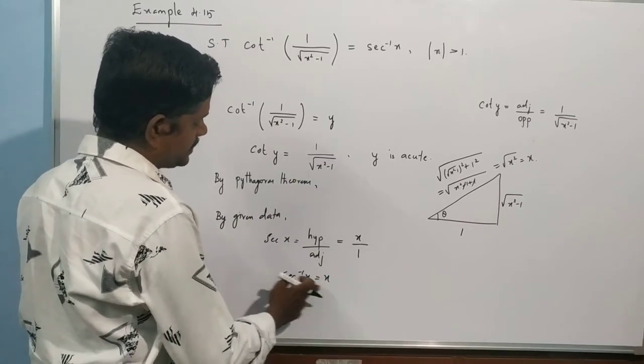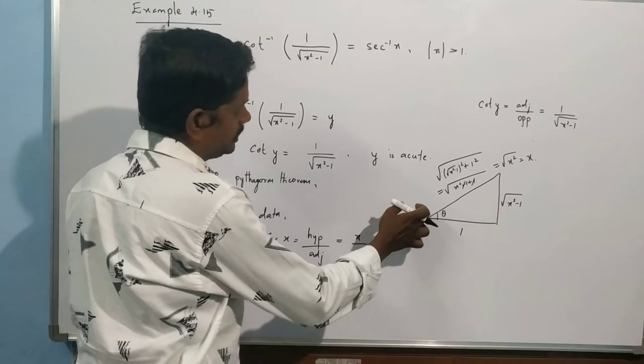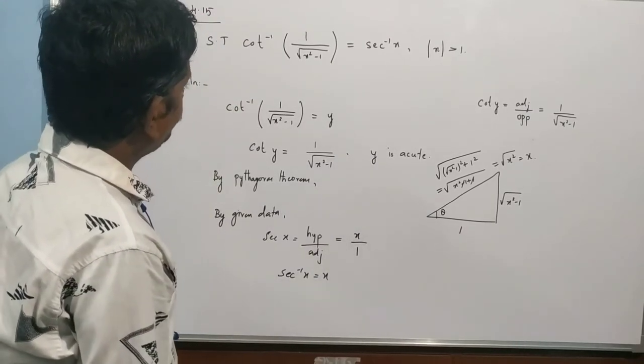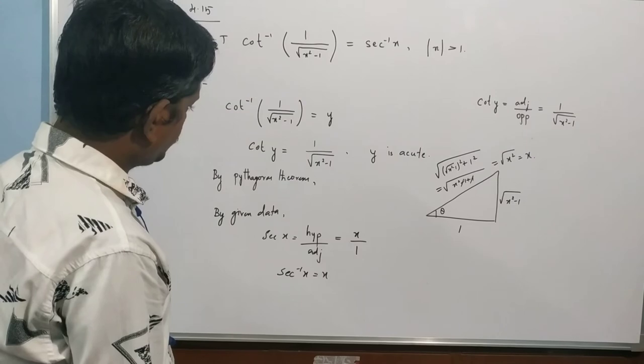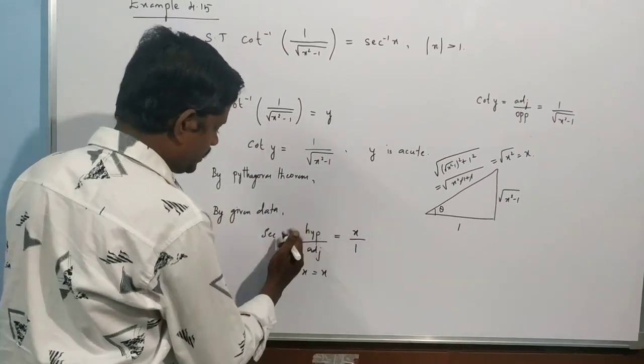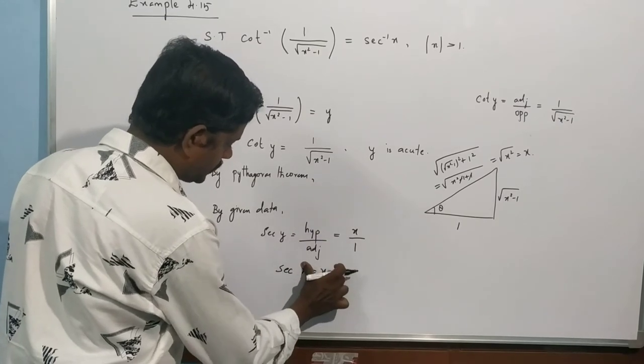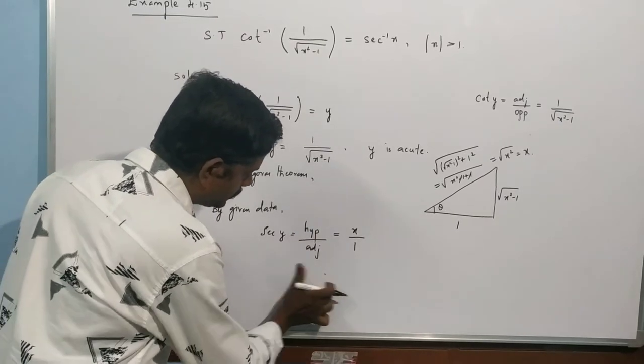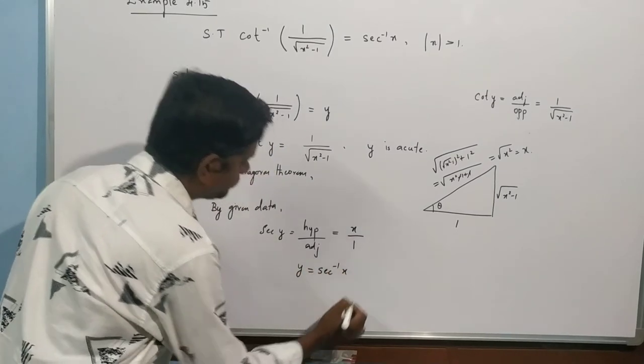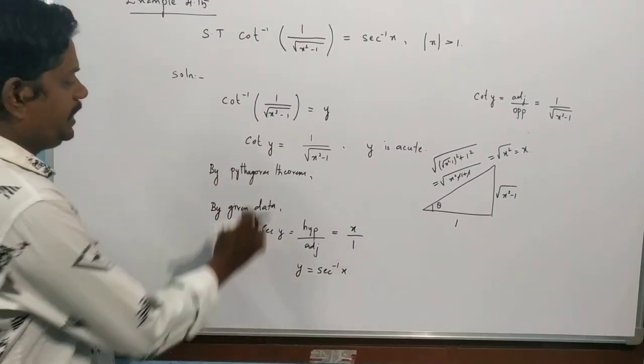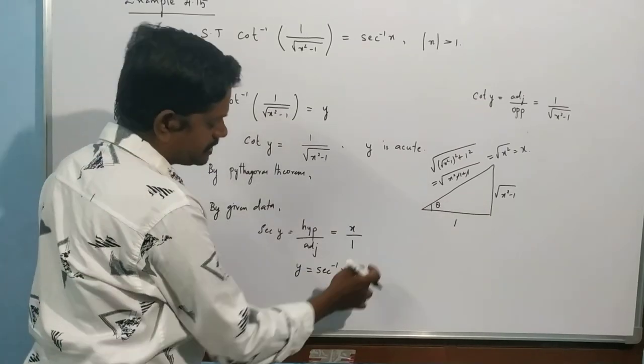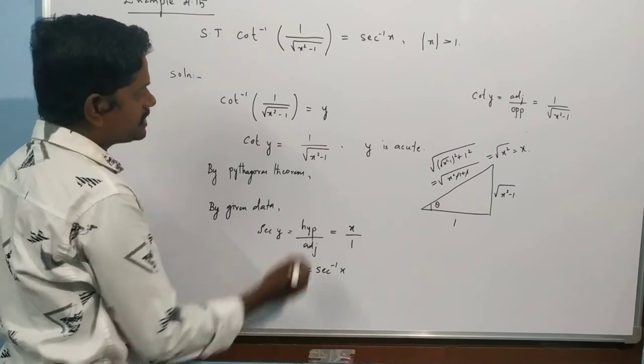We need to find sec inverse. If we get the sec x value, we have to find sec inverse. Cot inverse of 1 by root of x square minus 1. Why? Cot y is sec x. Now we have to define sec inverse y. Then if we get sec y, change it. Sec y value is x by 1, then y becomes sec inverse of x.